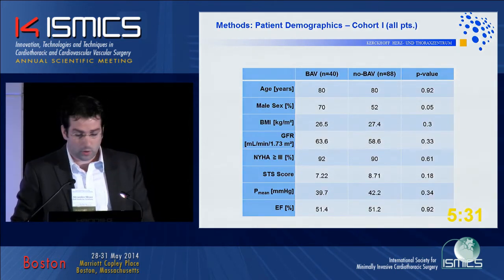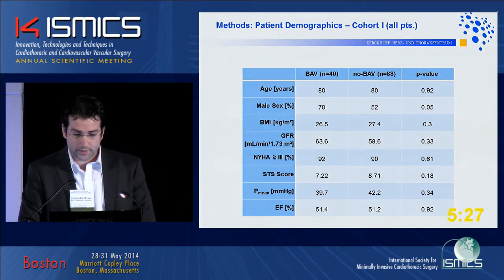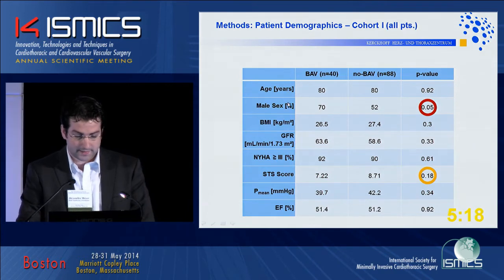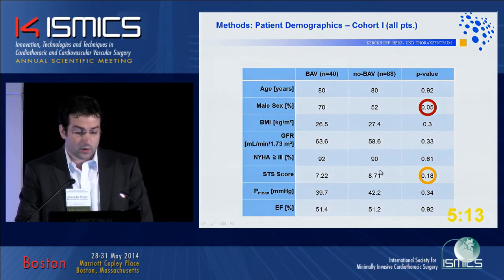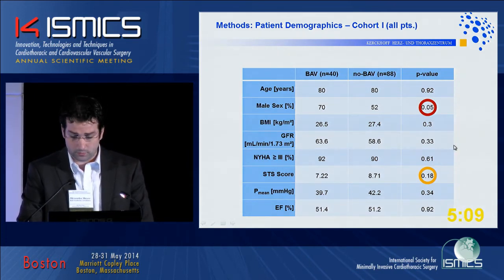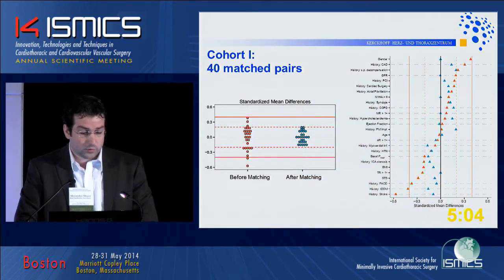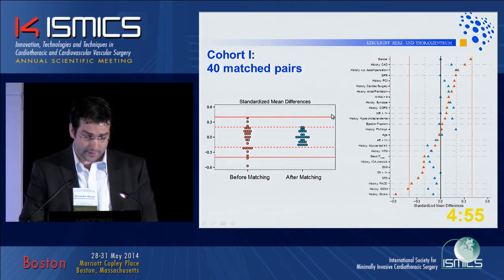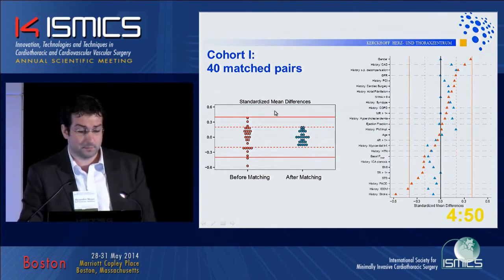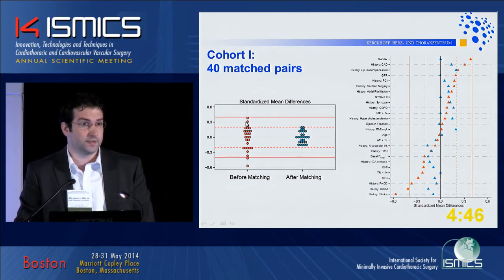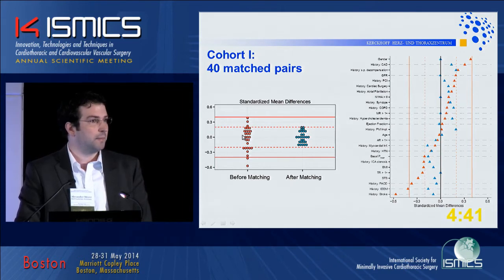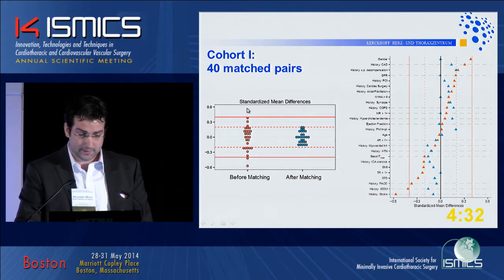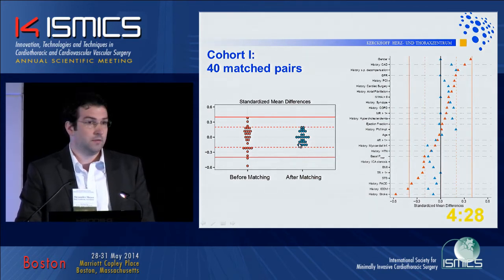Here you can see a typical Table 1 of our patients in cohort one — all patients. When comparing the two groups, it is necessary to have balanced covariates. You can already see there is a significant difference in gender distribution, and also a difference in the STS-PROM score. When we utilize propensity score matching, we have to show that we really decrease bias, which we do with these figures. On the left-hand side you can see the distribution of bias measured by standardized mean difference. Each spot corresponds to a single covariate spreading around the zero line — zero meaning basically no bias in that covariate.